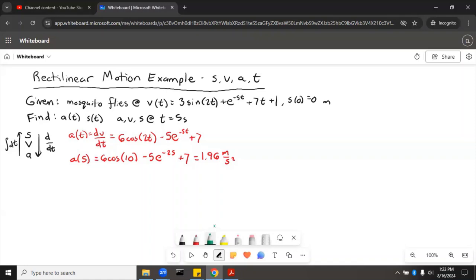Now the velocity, we can find velocity of 5 by just plugging in 5 to all of that. So we'll say v of 5 equals 3 sine of 10 plus e to the negative 25 plus 7 times 5 plus 1. Put that all into a calculator, and we get 34.36 meters per second. So that's velocity at t equals 5.